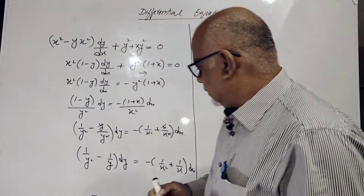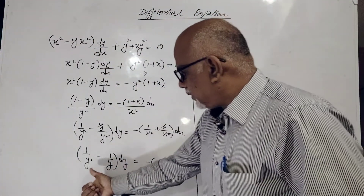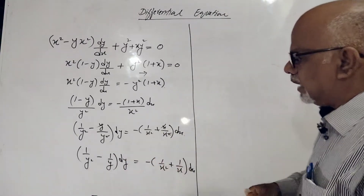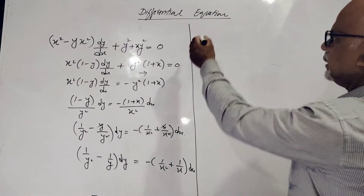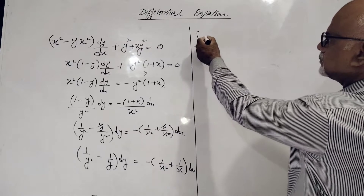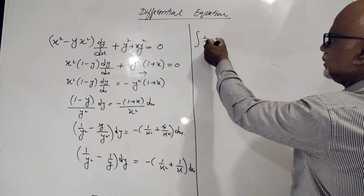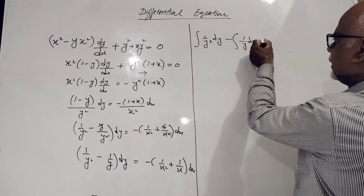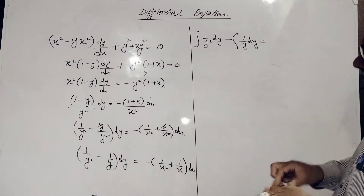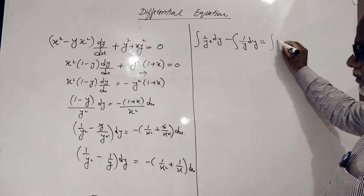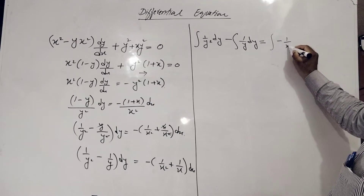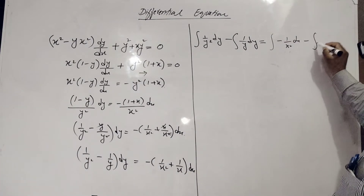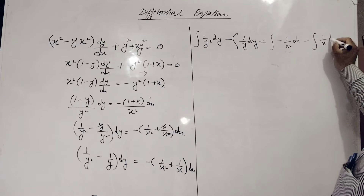Now we have to separate f of y with dy and f of x with dx, then take the integration of both sides. So the left side is the integral of (1/y²) dy minus the integral of (1/y) dy, and the right side is the integral of (1/x²) dx plus the integral of (1/x) dx.